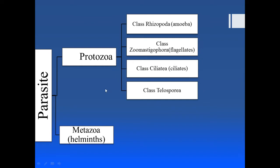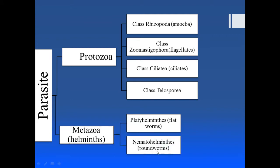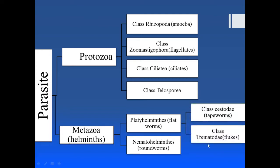The metazoa are further classified on the basis of body structure. If they have flat bodies, they are placed into Platyhelminthes; if they have rounded bodies, into Nematohelminthes — flatworms and roundworms. The flatworms are further divided into tapeworms, which have segmented bodies, and flukes, which have leaf-like bodies. Today we cover class Zoomastigophora.